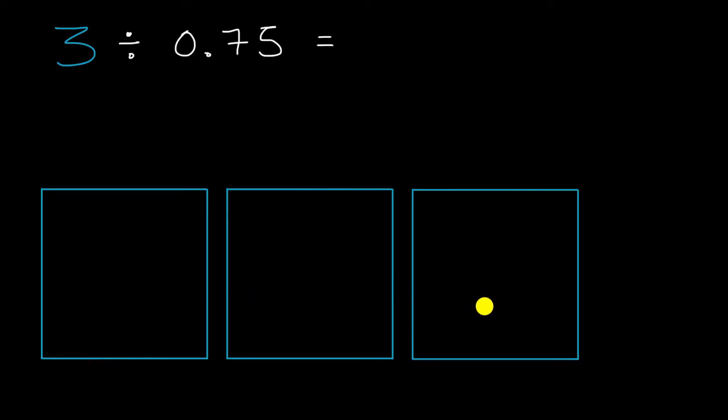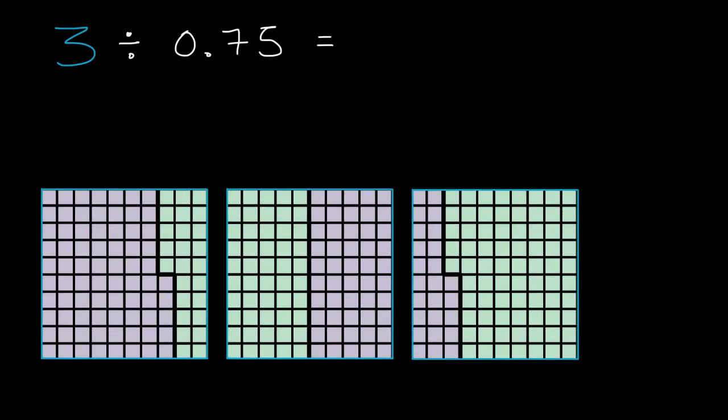well, how many groups of 75 hundredths can we divide this into? How many equal groups of 75 hundredths? And to help you think about that, here's a little bit of a visualization where three is divided into equal groups of 75 hundredths.